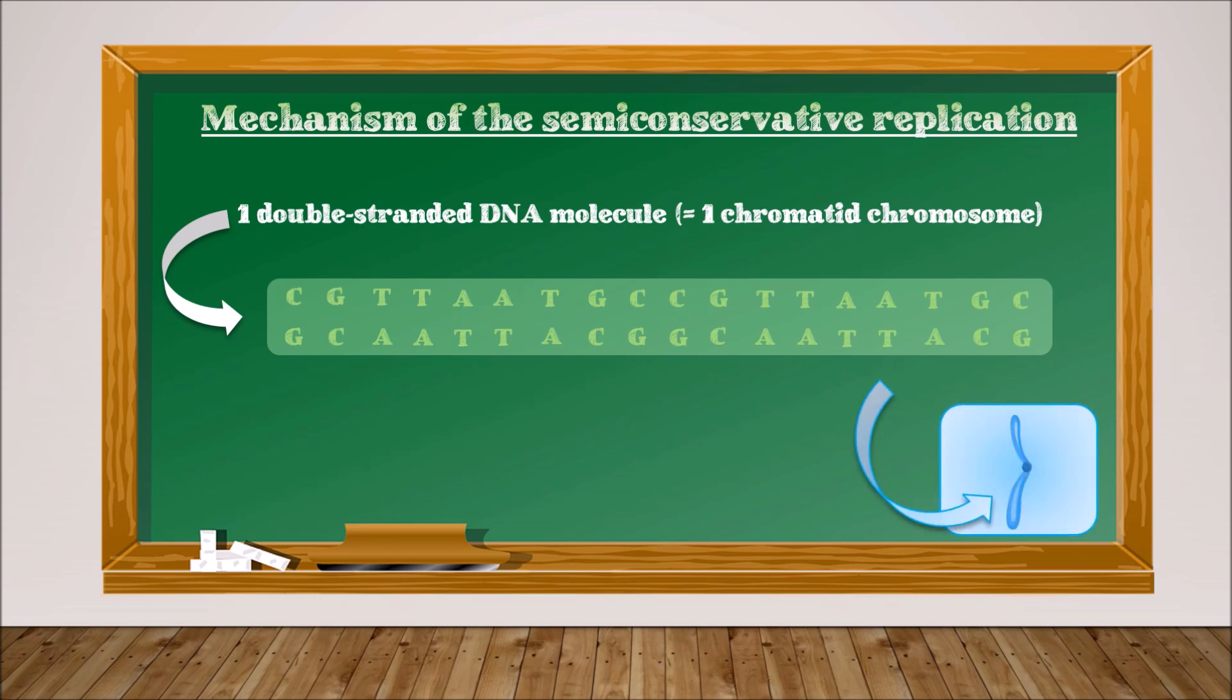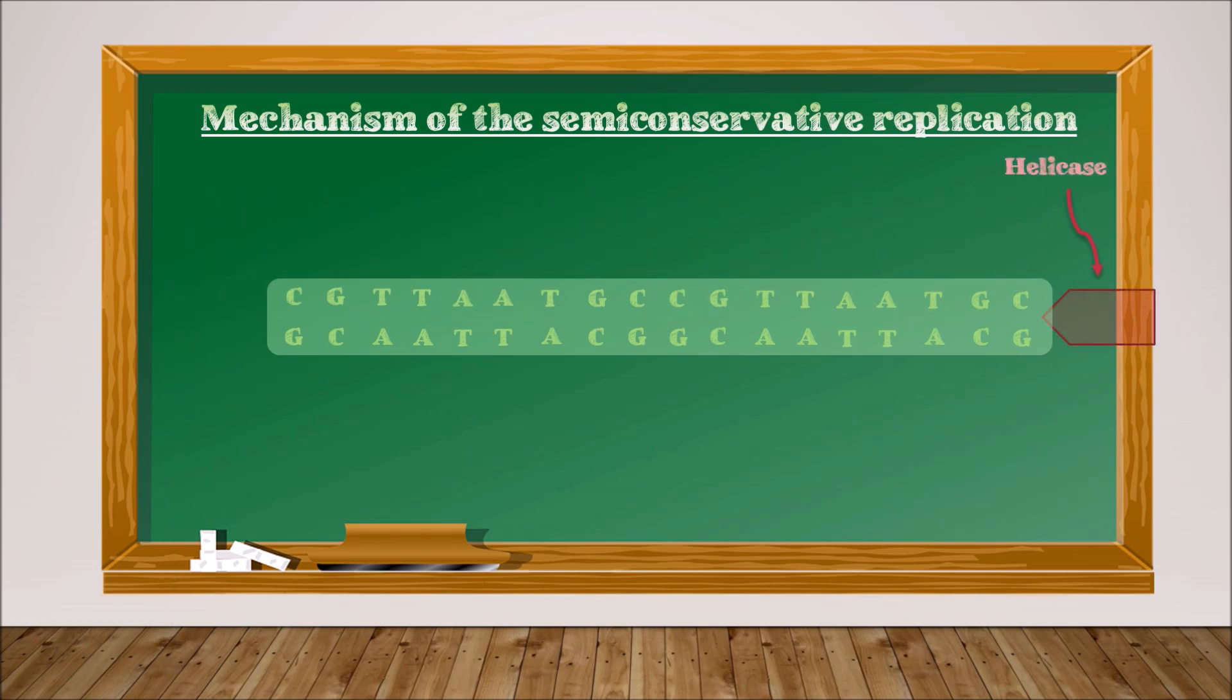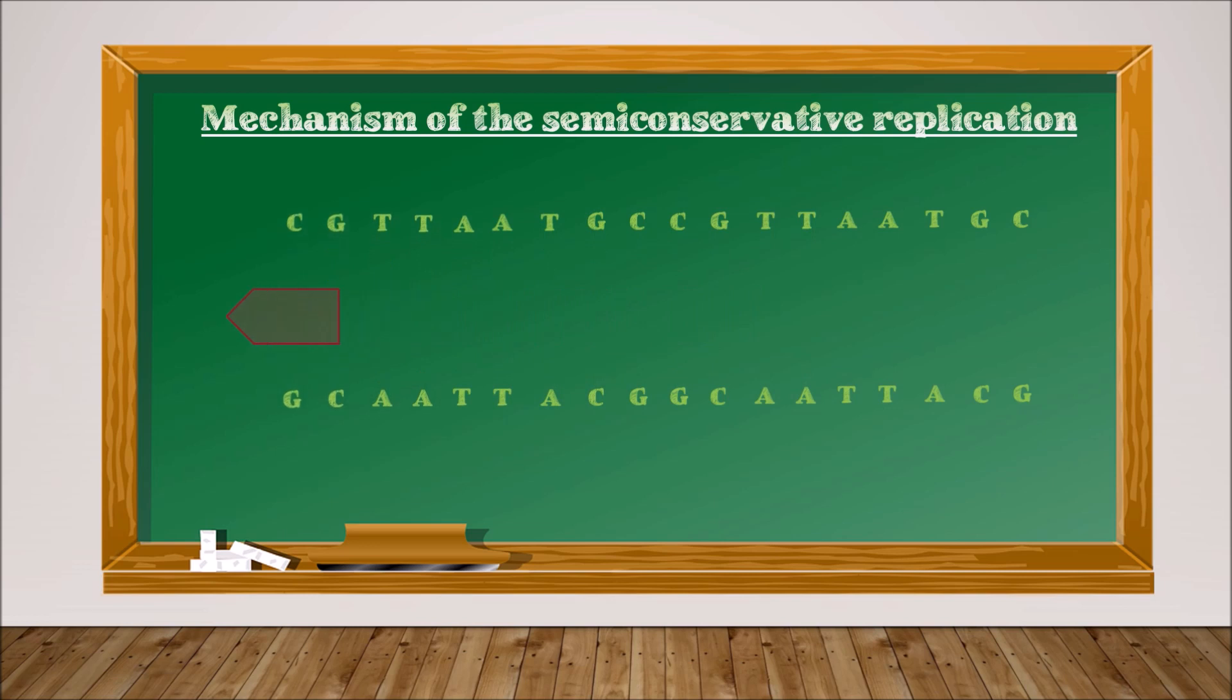An enzyme called helicase comes, whose role is to separate the two strands of the DNA molecule. Once these two strands are separated, another enzyme will come, which is called DNA polymerase. Its role is to make a complementary strand to the parental strand. It will do this for each parental strand.